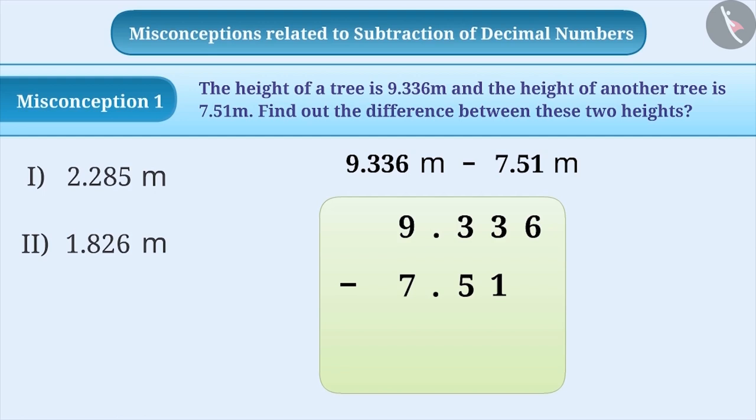To make the number of digits equal, they write 7.51 as 7.051. In brief, they write 0 right next to the decimal point. With this misunderstanding, the students get the result as 2.285 meters.